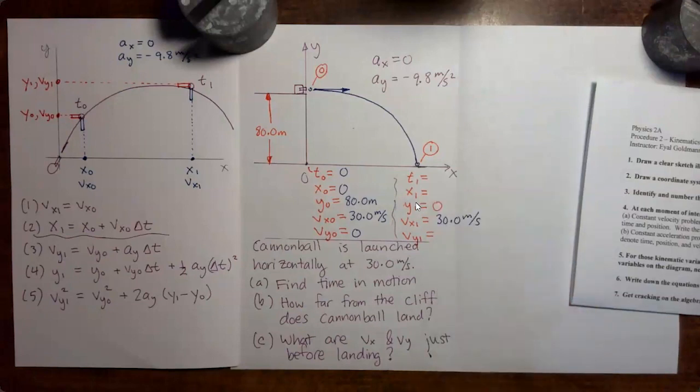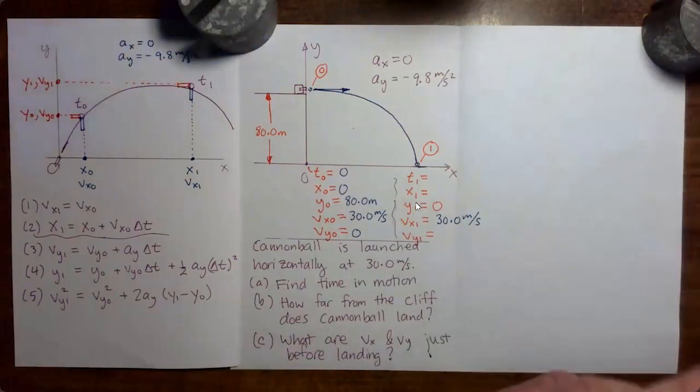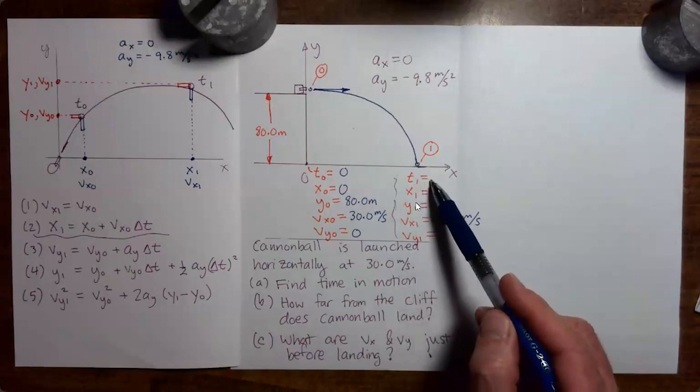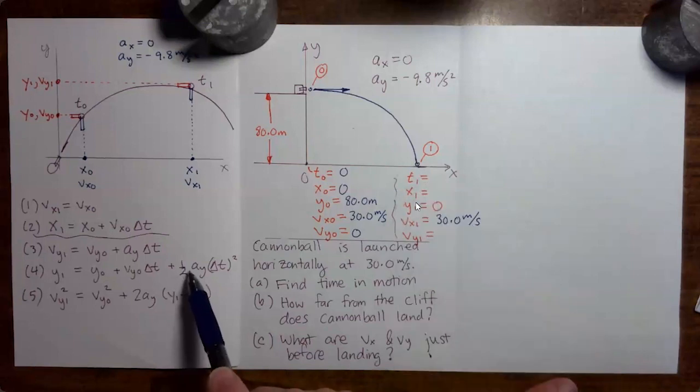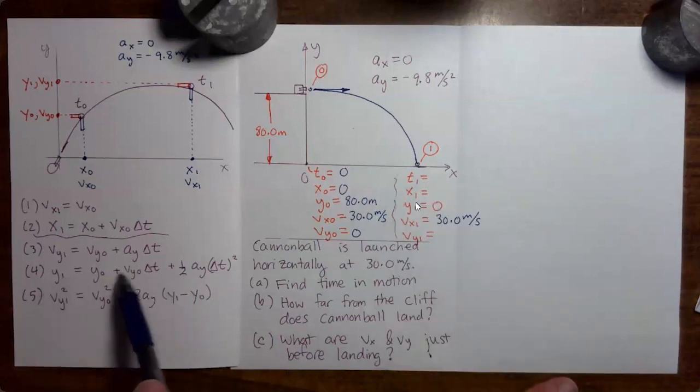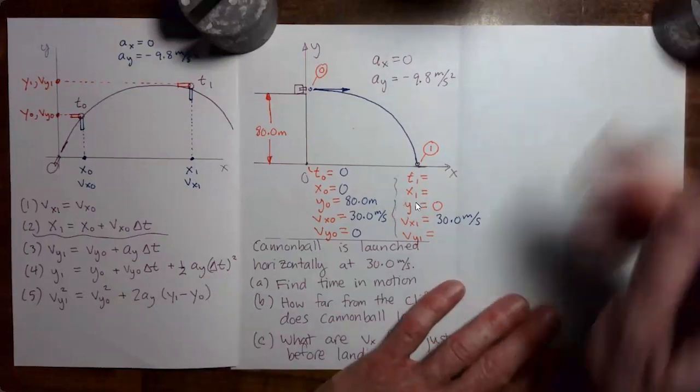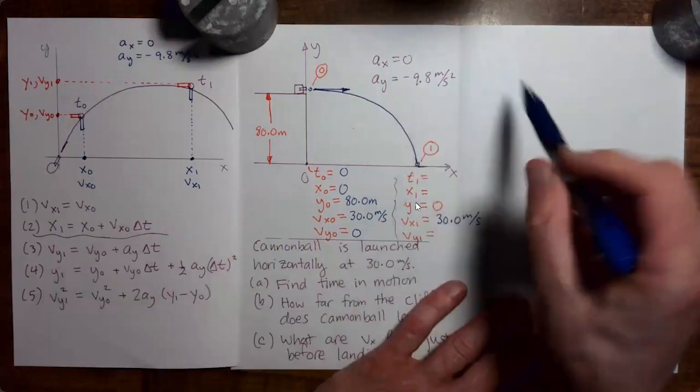So the equation here that allows us to solve for time one in a single step is equation four. So everything in equation four is known except for time one. So to see that, let me take equation four and write it out over here.